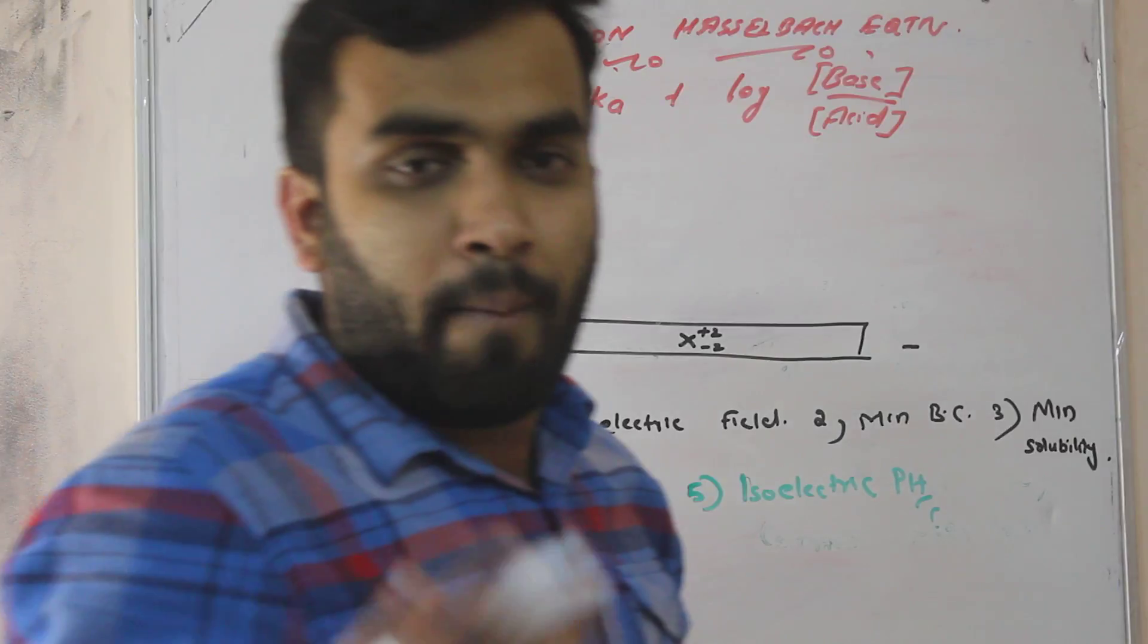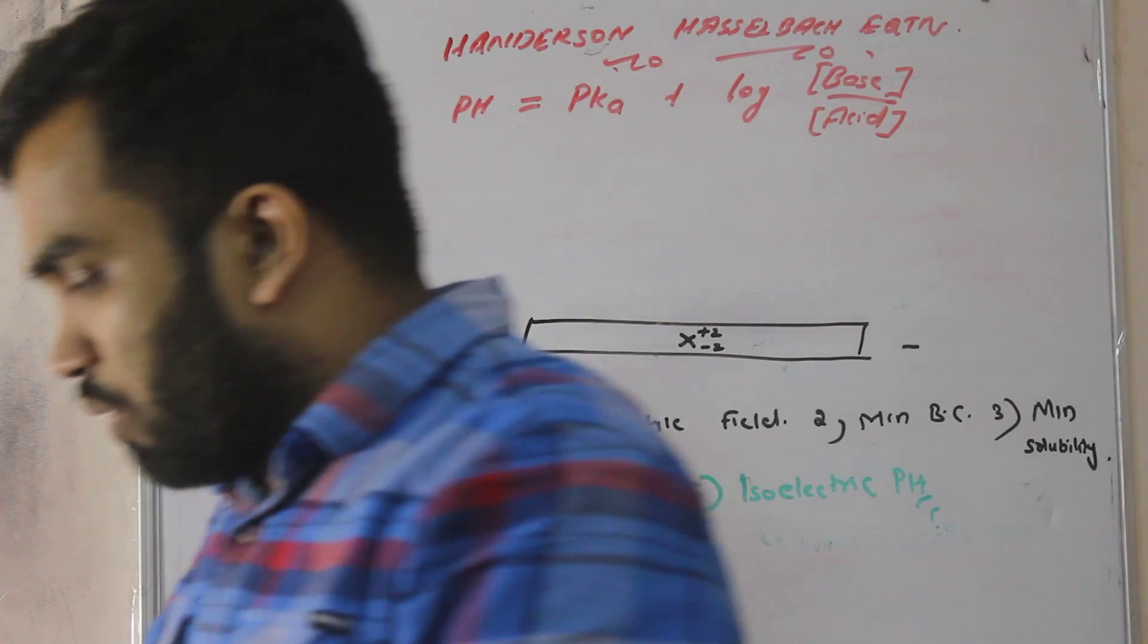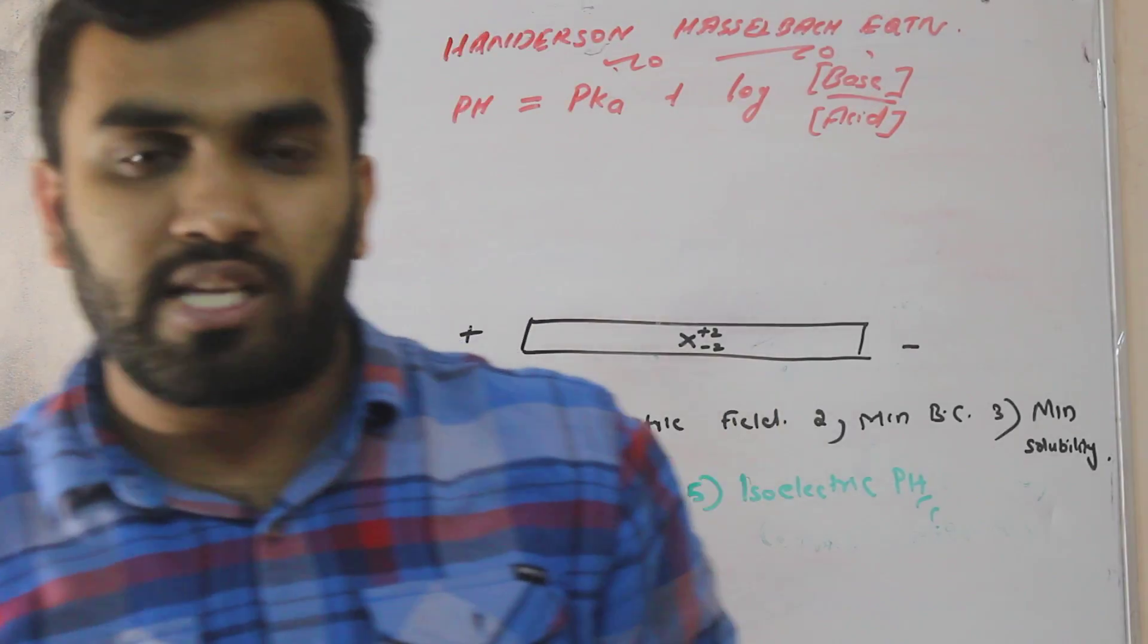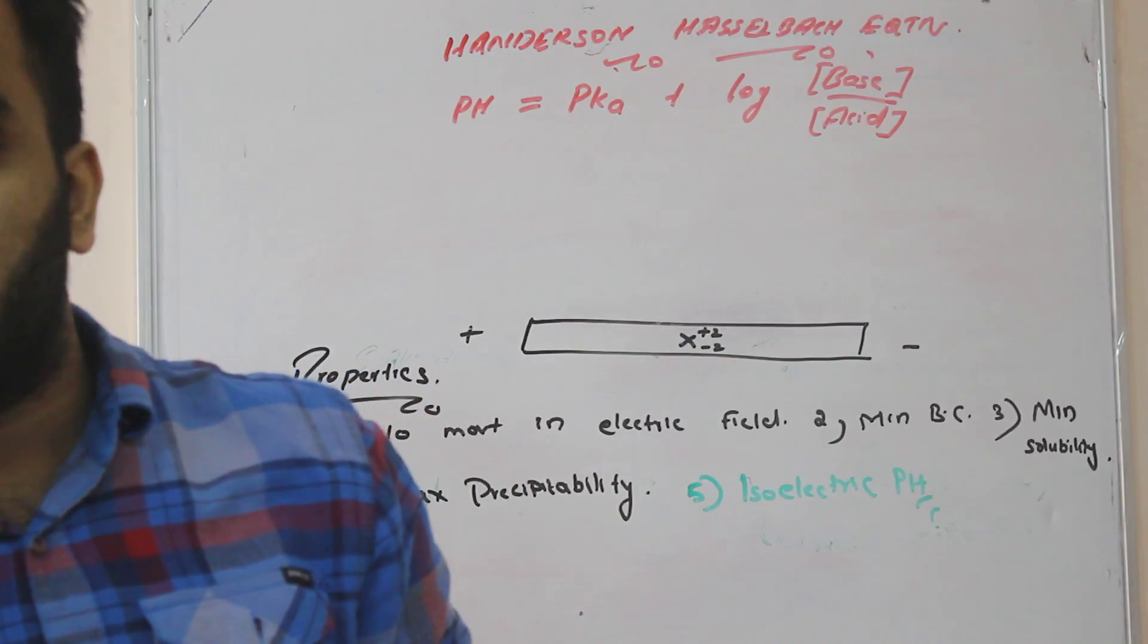Just know what the equation is and what is the name of equation: Henderson-Hasselbalch equation. That is pH is equal to pK plus log base by acid. So that's all about the buffer capacity and zwitterion.